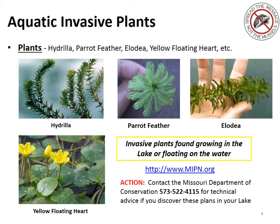Aquatic invasive plants come in many different forms, but four different plants to look for in your lake that may be floating on the water or growing nearby are hydrilla, parrot feather, elodea, and yellow floating heart. Please contact the Missouri Department of Conservation for technical advice if you discover any of these plants in or near your lake.